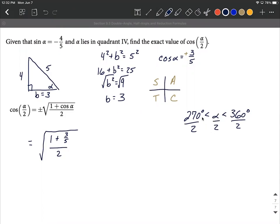So 270 degrees divided by 2 makes 135 degrees. Alpha over 2 still in the middle, and then 360 divided by 2 makes 180 degrees. So this tells us alpha over 2 fits between 135 degrees and 180 degrees. That's squarely in quadrant number two.